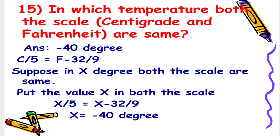Here I will show you how the answer of minus 40 degrees is correct. The formula C/5 = (F − 32)/9 is used to convert Celsius to Fahrenheit and vice versa. Suppose X degrees is where both scales are the same. Putting the value of X into both scales, you will get X = −40 degrees.